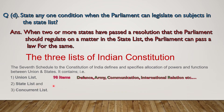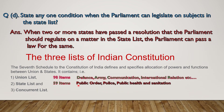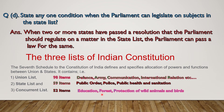Then the State List — in the State List a total of 59 items are mentioned. Only the state legislative body can make laws on those topics. Some items are public order, police, public health and sanitation. Then the Concurrent List — in the Concurrent List a total of 52 items are mentioned. On items in the Concurrent List, both the Union Legislature as well as the State Legislature can make laws. Some important items are education, forest, and protection of wild animals and birds.